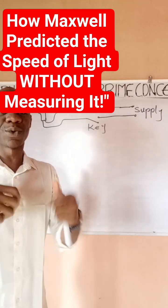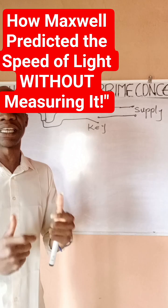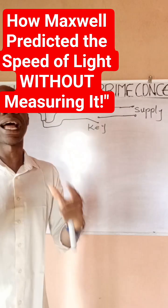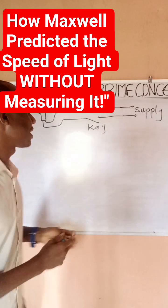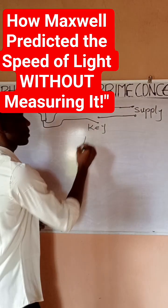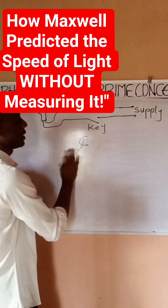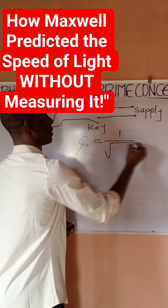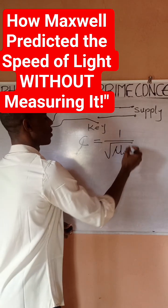And that was calculated in electromagnetism by James Clark Maxwell. He calculated that using his formulas and he arrived at the speed of light c, which is equal to one over square root of mu naught and epsilon naught.